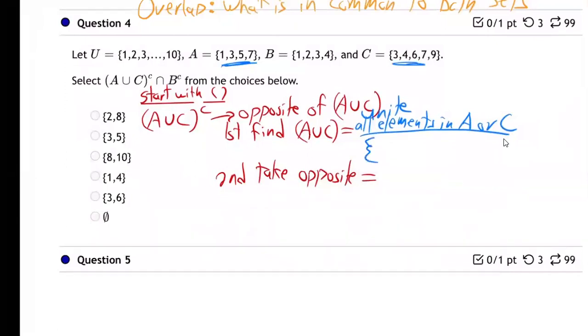So that's going to be one, three, five, seven. I got all of A there. And then throw onto it C. Already got the three. And then four, six, seven. Already got the seven, nine.